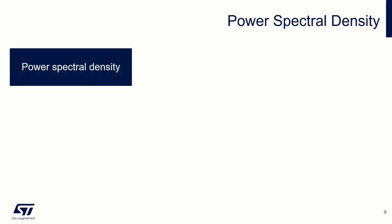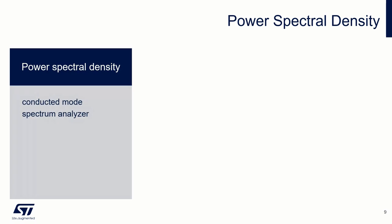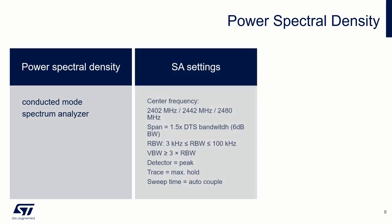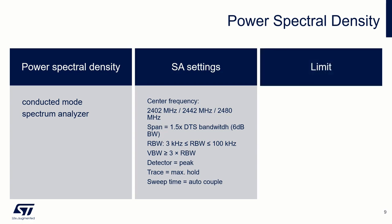Let's start with power spectral density. We will use a spectrum analyzer and measure in conducted mode. Measurements are performed on 3 channels: low, middle and high. The limit is plus 8 dBm over 3 kHz.